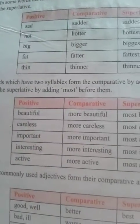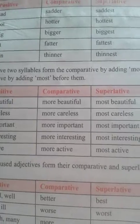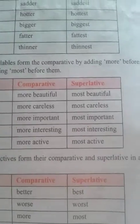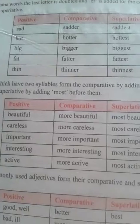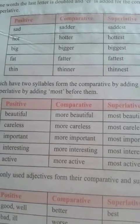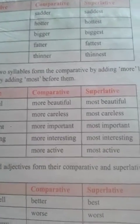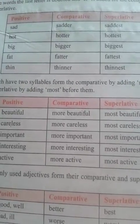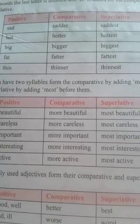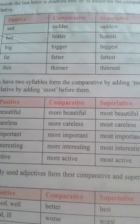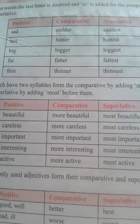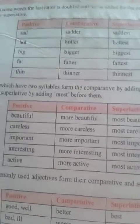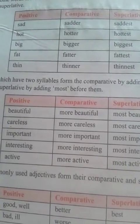Words which have two or more syllables form the comparative by adding 'more' before them and the superlative by adding 'most' before them. Examples: beautiful, more beautiful, most beautiful; careless, more careless, most careless; important, more important, most important; interesting, more interesting, most interesting; active, more active, most active.